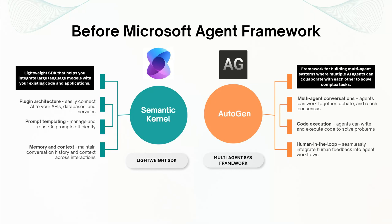Before this framework was formalized, there were two separate pieces: Semantic Kernel and AutoGen. Semantic Kernel is a lightweight SDK that helps you integrate large language models with your existing code and applications.